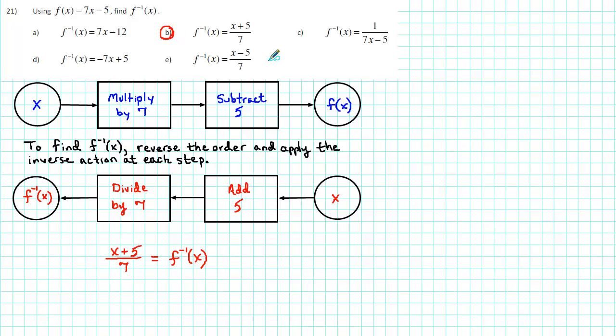An alternative way to find the inverse function is to solve y equals f of x for x, and then interchange the x's and y's. In this case, we have y is equal to, in place of f of x, we put 7x minus 5.